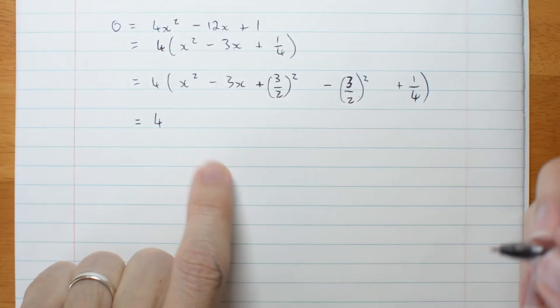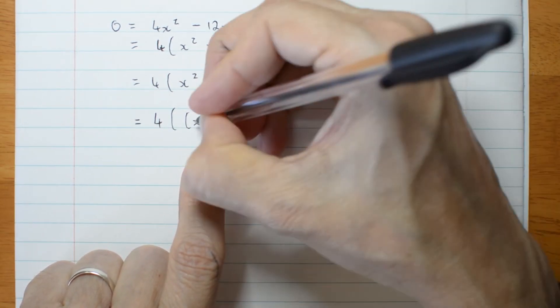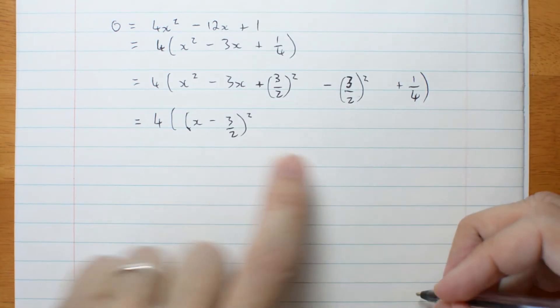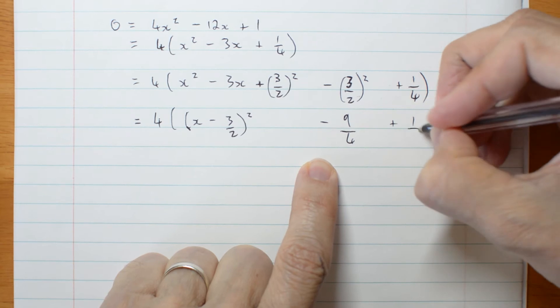Well, this part is x minus 3 on 2 squared. This part is minus 9 on 4 plus 1 on 4.